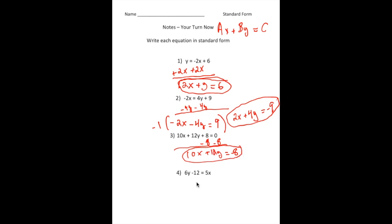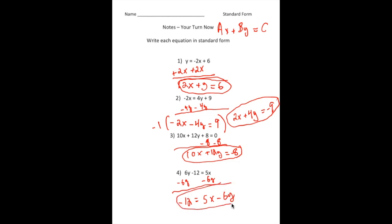And the last one: we have 6y minus 12 equals 5x. What I'm going to do is take away 6y from both sides. When I do that, I now have negative 12 equals 5x minus 6y, and that's now written in standard form. How'd you do?